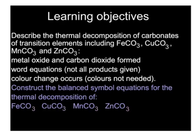A reaction we need to be familiar with for the transition elements is the thermal decomposition of their carbonates. We need to know that the metal oxide and carbon dioxide are formed and that we get color changes for each of these. You will need to be able to write word equations and balance symbol equations for each of these reactions. Thankfully, they're all pretty much identical to each other.